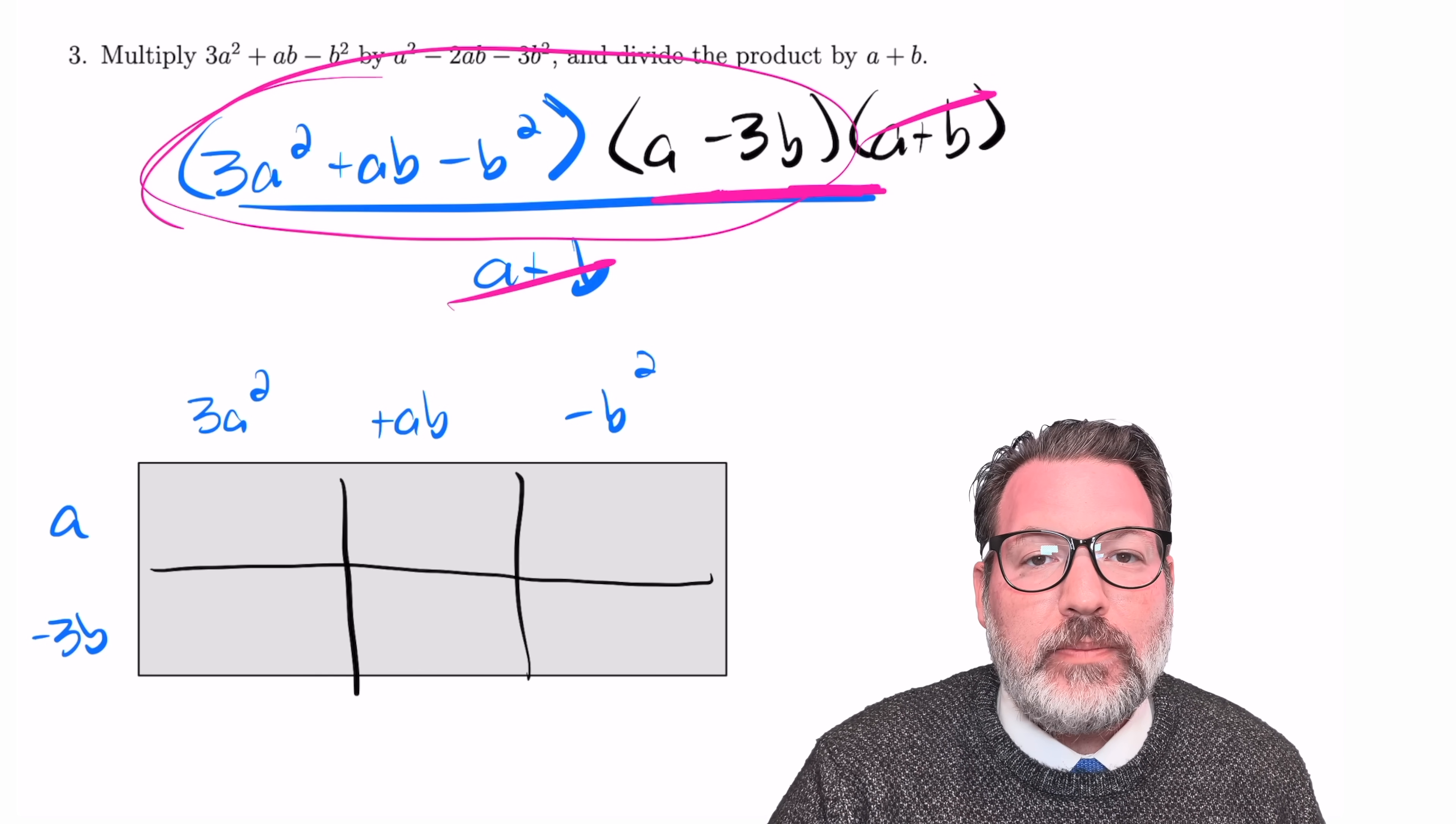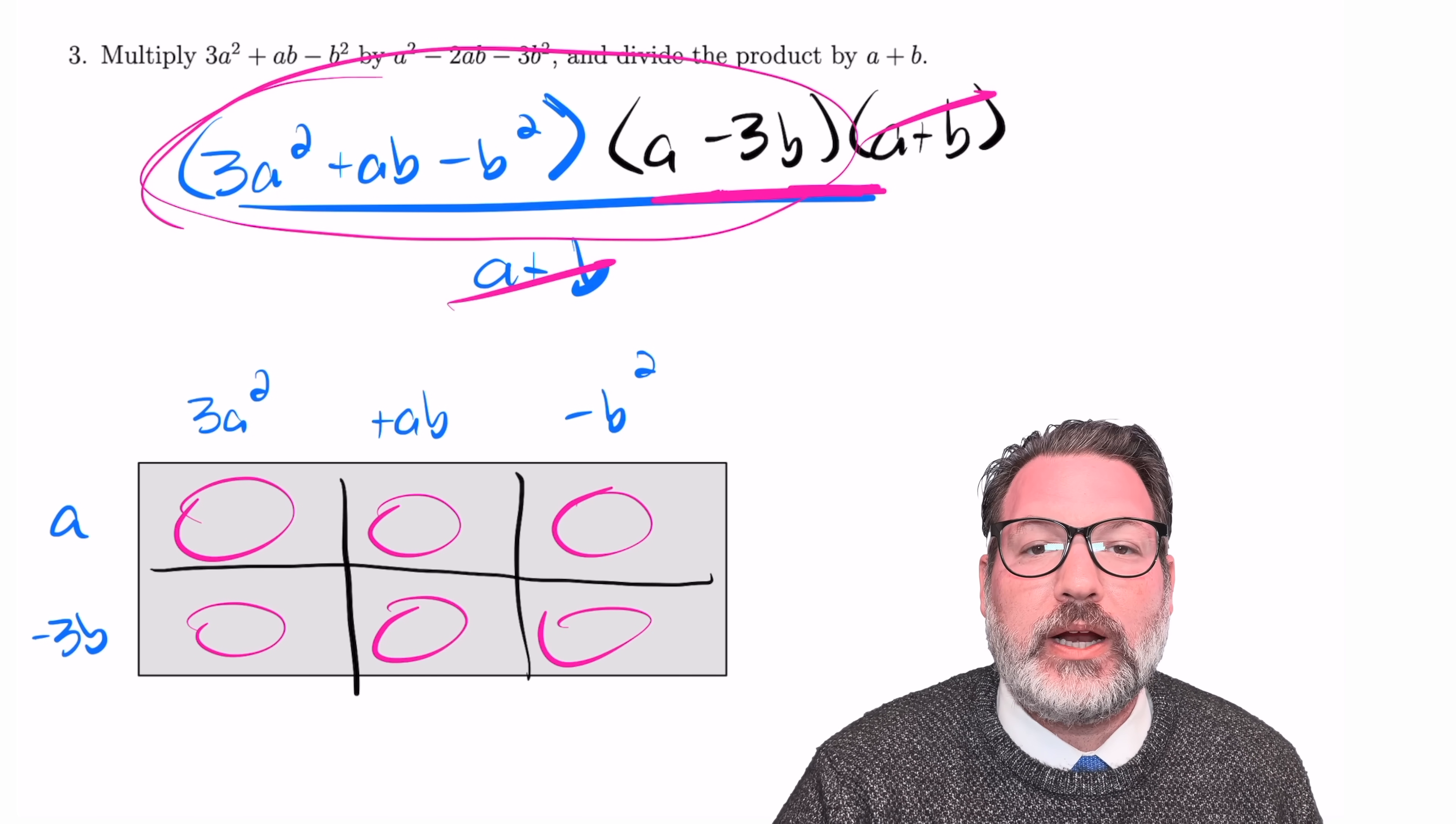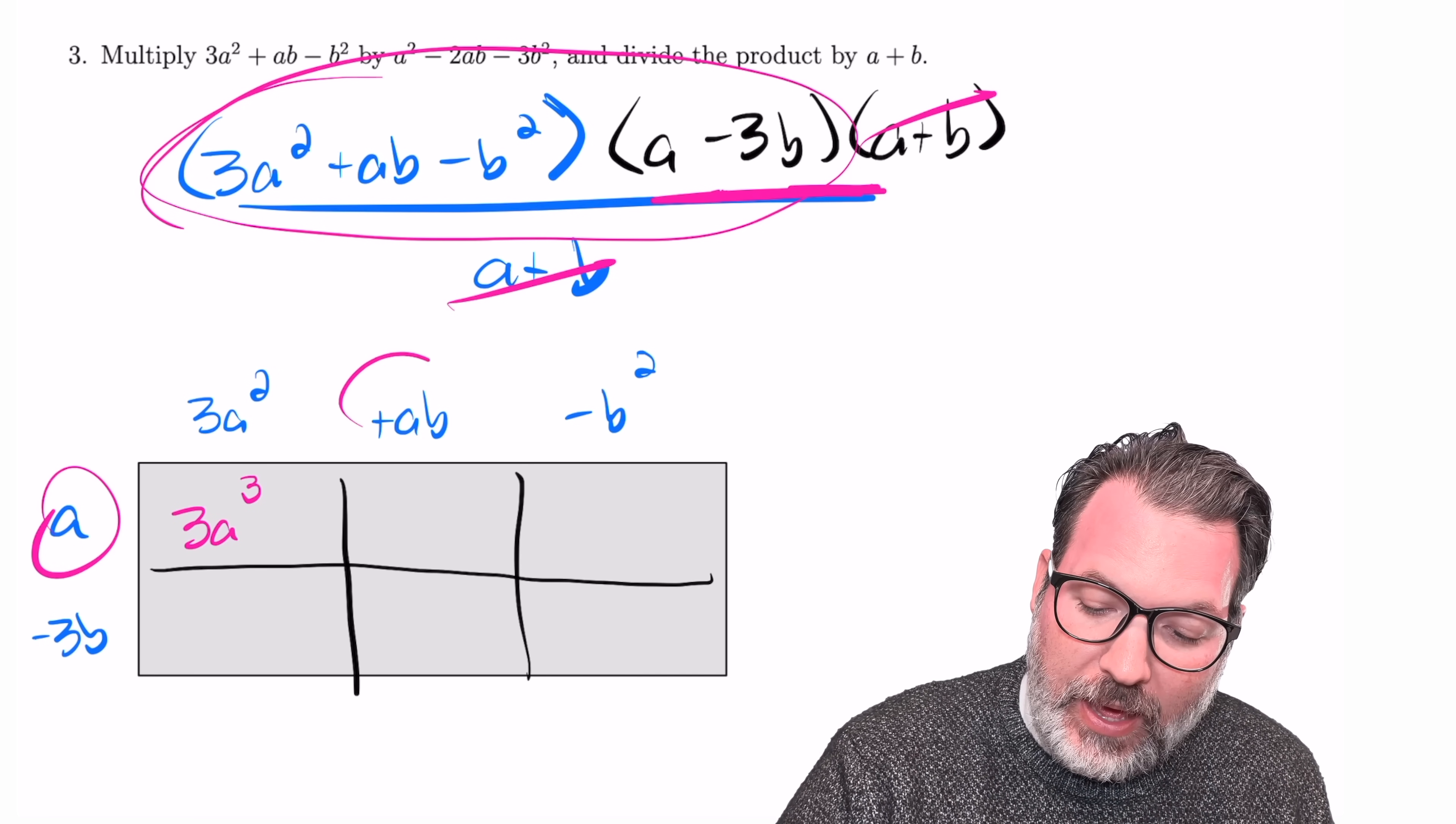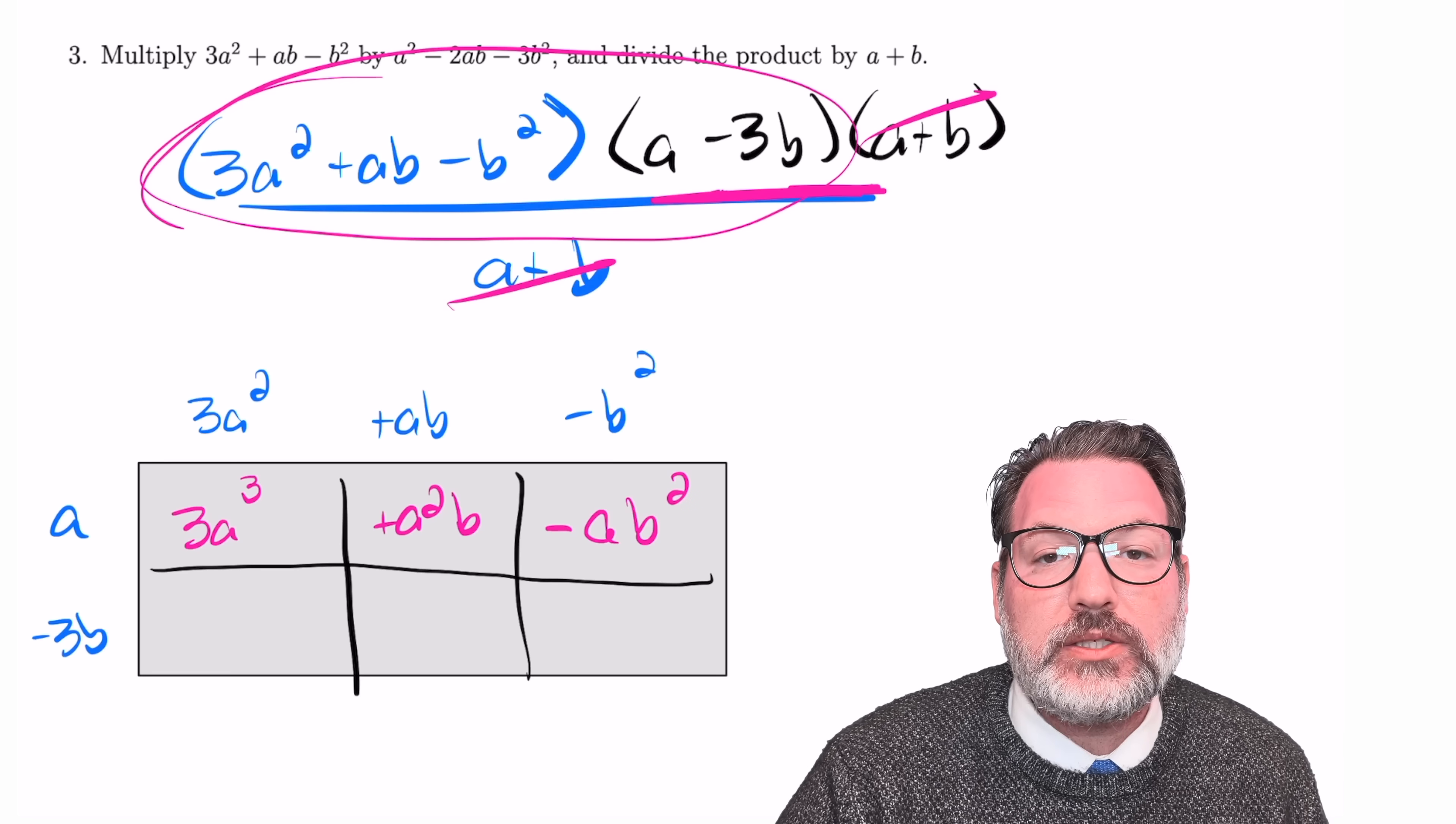From here, we do that same thing we did all the way back with 13 times 14. We're going to treat these as a bunch of different rectangles that we're going to find the area of, and then we're going to add those areas back together at the end to get our final product. 3a squared times a, that's 3a cubed. a times ab, that's going to be a squared b. a times negative b squared, that's going to be minus ab squared.